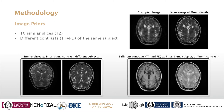Two different types of image priors were explored during this work. The first is using similar slices of the same contrast but from different subjects, which were not corrupted by motion. In the second set of experiments, we used different contrasts from the same subject without any motion corruption as our prior.